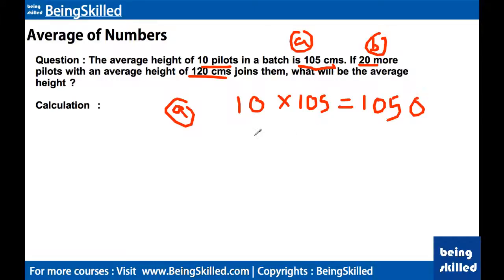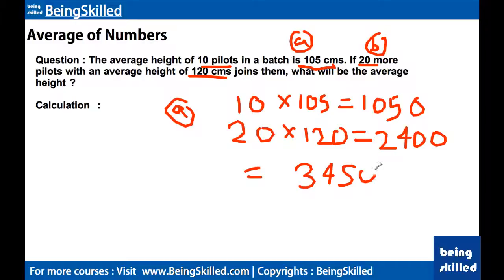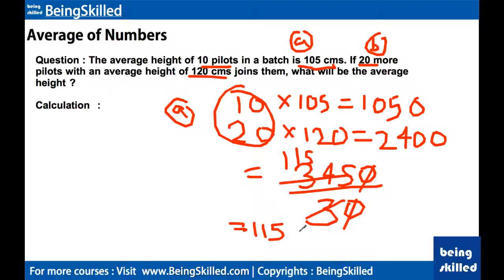We have 10 pilots with average height 105 cm, giving a total of 1050 cm. The other 20 pilots have average height 120 cm, giving 2400 cm. Adding these: 1050 + 2400 = 3450 cm. We have 30 pilots in total, so we divide 3450 by 30, which gives 115 cm. The resultant average height is 115 cm.